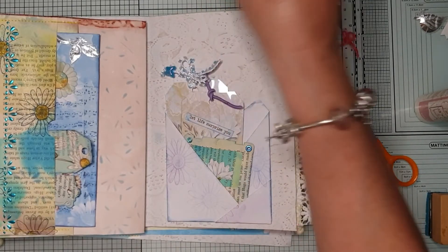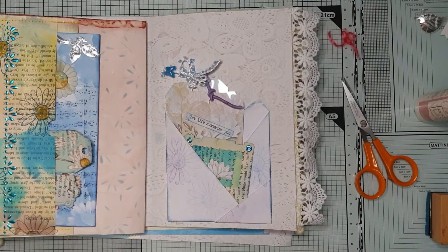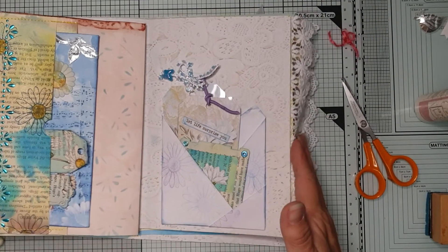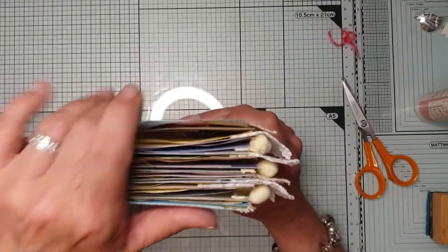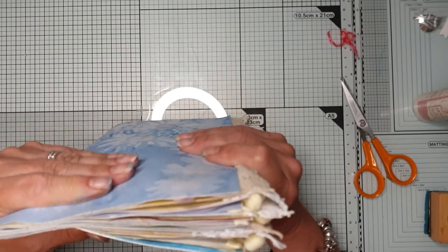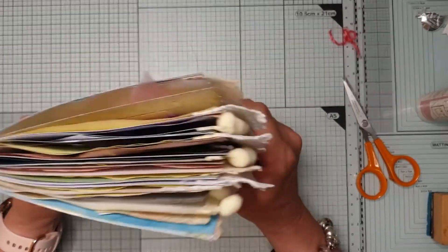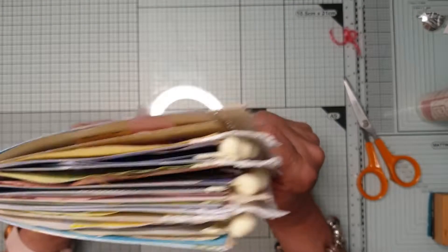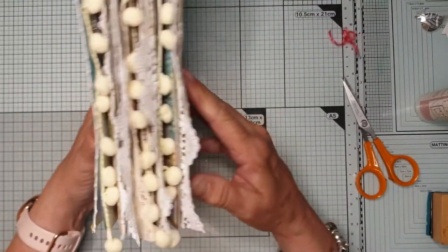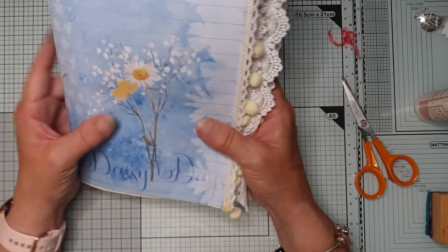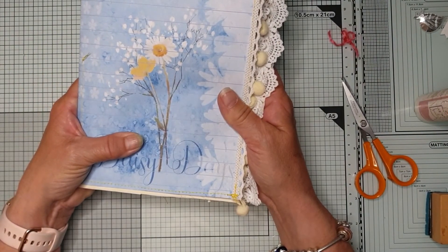So thank you for watching. The next video we'll be making the cover and then the video after that will be the flip through of the actual journal. I might change it to two signatures. It depends on what I want for the cover. And I'm not quite sure and there's still quite a bit more to go in. But I will do that offline.